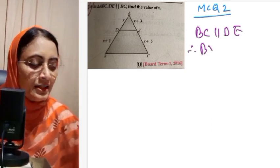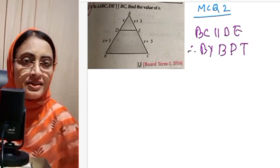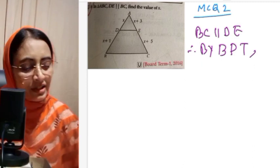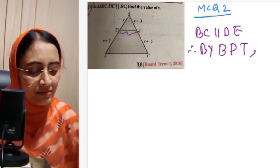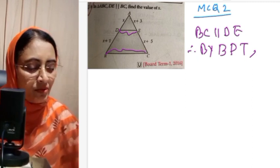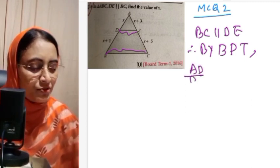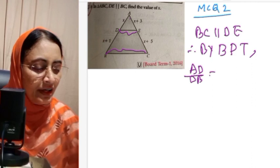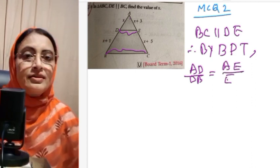By the Basic Proportionality Theorem (Thales' theorem), if a line is parallel to one side of a triangle, then it divides the other two sides proportionally. Therefore, AD by DB is equal to AE by EC.